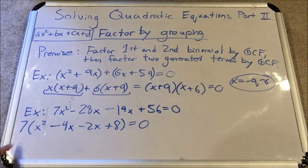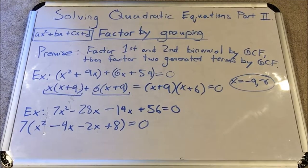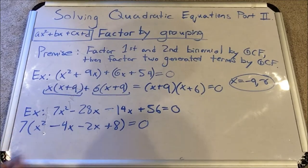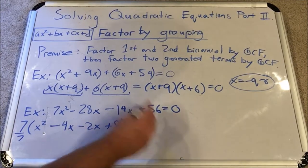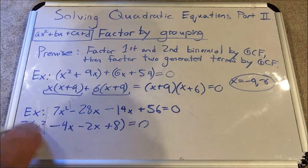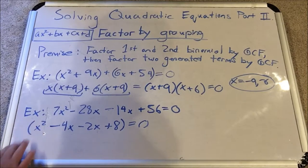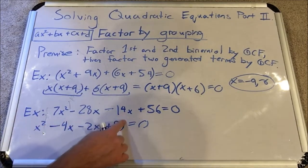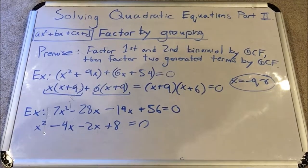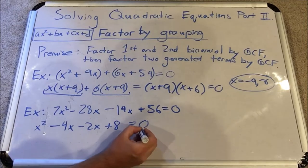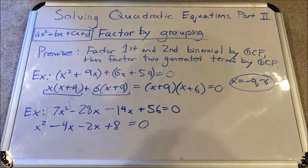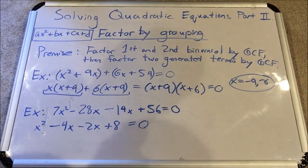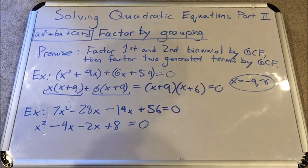By the zero product property, either the factor of 7 or the remaining polynomial can equal zero. Since 7 itself never equals zero, I can divide it out — it disappears and is erased entirely through division. That's always true with numerical factors. Now I have a very simple polynomial left to work with, and note: we can remove that 7 only because we are solving the equation, not just factoring.